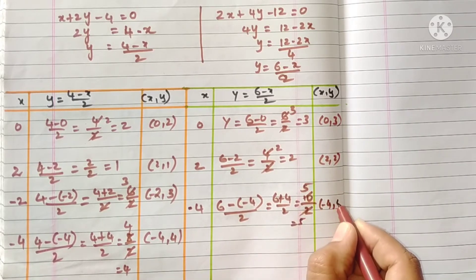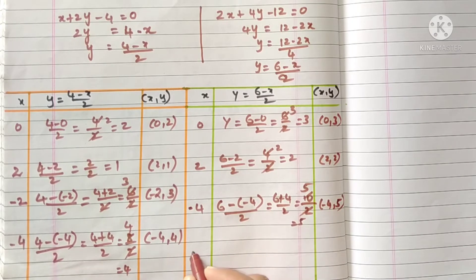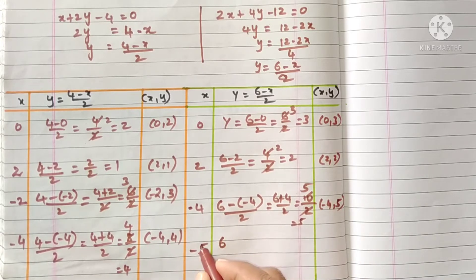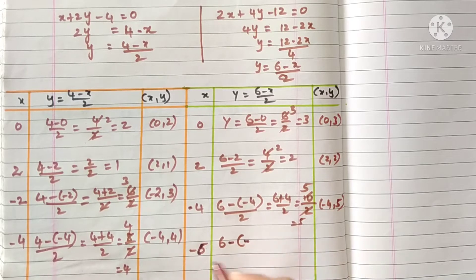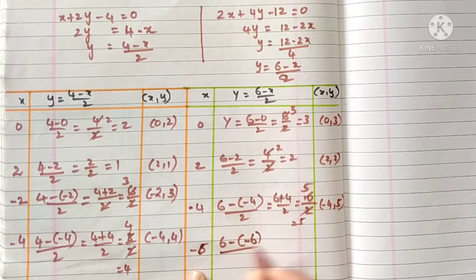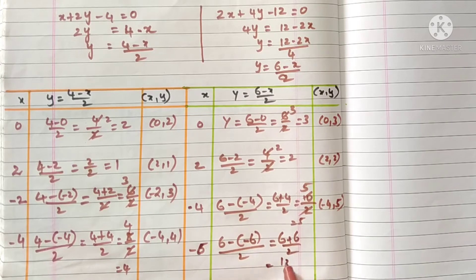If x is minus 4: y equals 6 minus minus 4 by 2, that is 6 plus 4 by 2, ten by two, so y equals 5. Point: (minus 4, 5). If x is minus 6: y equals 6 minus minus 6 by 2, that is 12 by 2, so y equals 6. Point: (minus 6, 6).